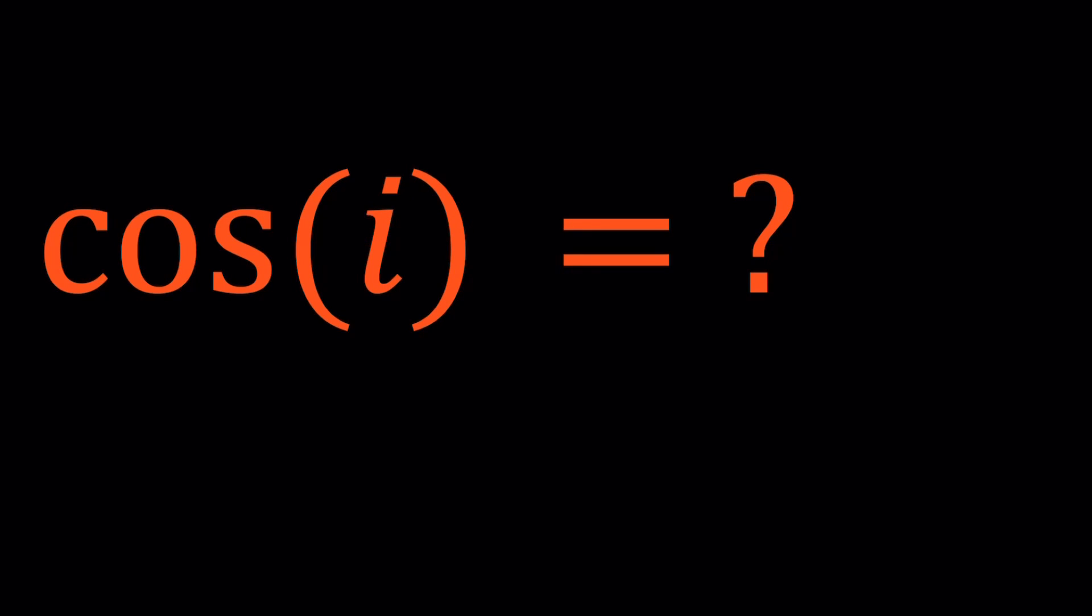Hello everyone. In this video, we're going to evaluate a very interesting number. It is cosine i. What is i? i is imaginary. It is defined as one of the square roots of negative 1 as a complex number, or the number whose square equals negative 1. So it's imaginary. It doesn't exist in real world. But it's very helpful.